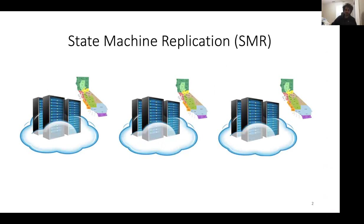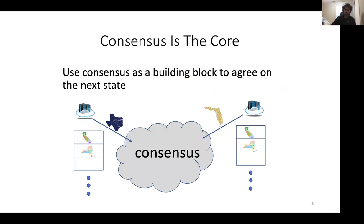What is state machine replication? We simply have a state and we want to replicate it reliably on many servers. In order to do it, we usually use consensus as a building block, so each server maintains its local log. In order to update to the next state, servers propose the next state to the consensus, and using consensus, they agree on the unique state and then simply add it to their log.